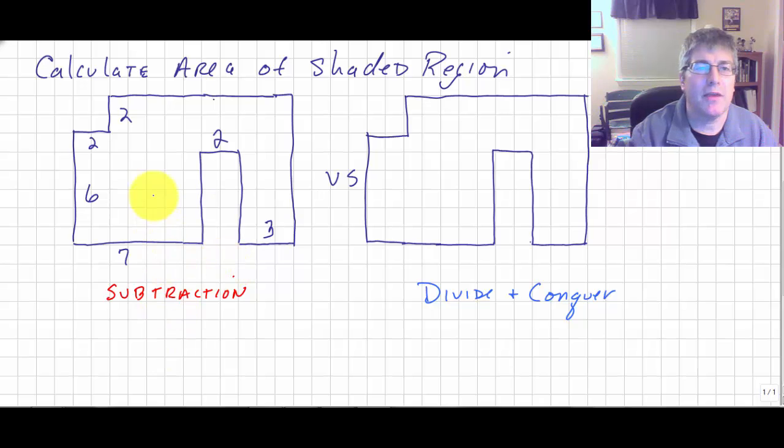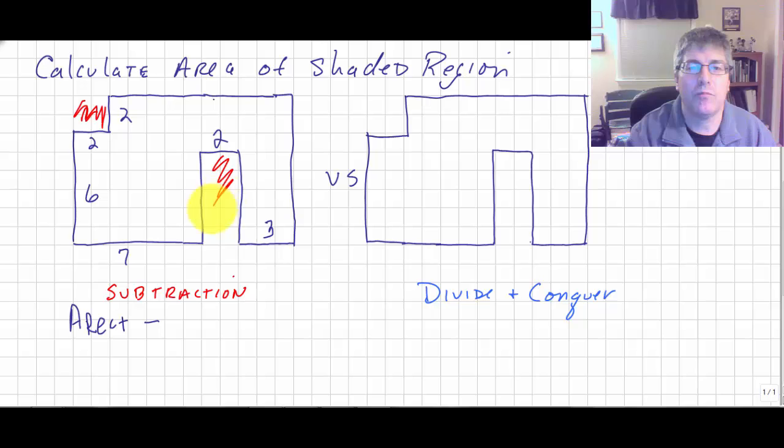So the subtraction method, we could say we could find the area of the entire region, maybe the area of the rectangle, and then we could subtract our cutouts. So we could subtract this area and we could subtract that area. So we could find the entire area here, which is eight by 12.